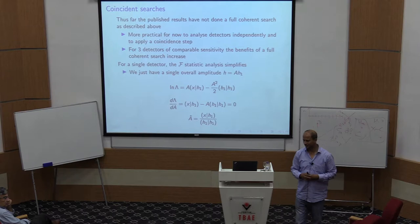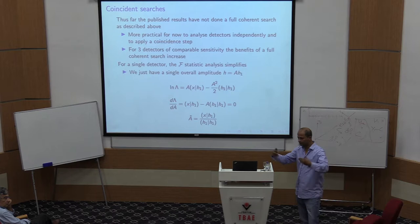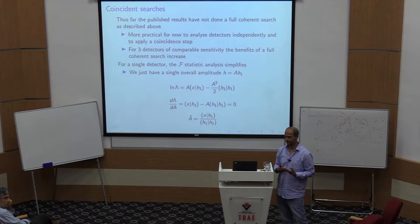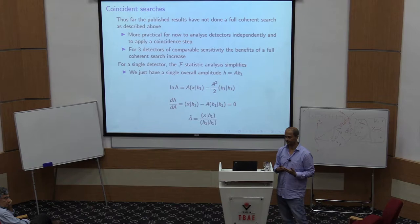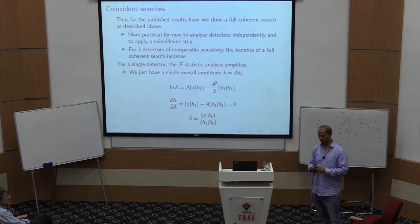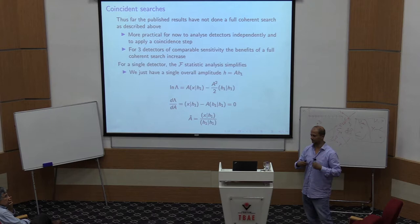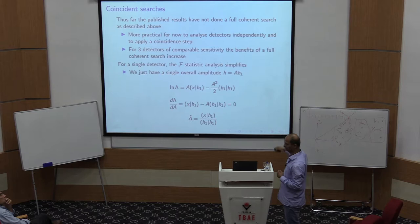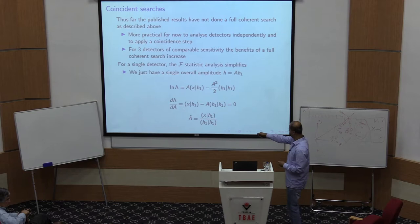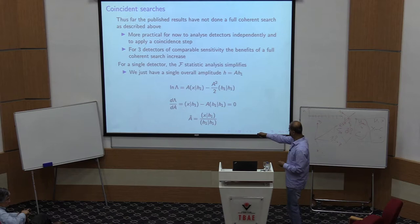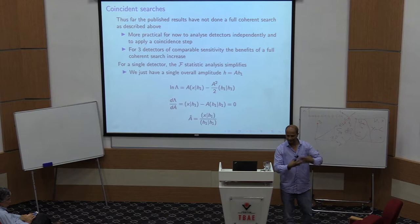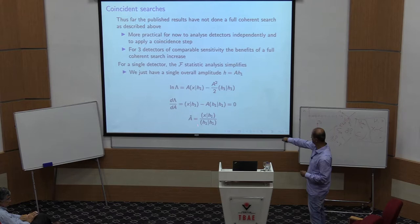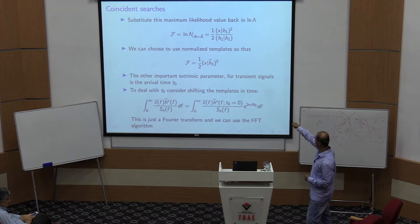For two detectors, the coincidence analysis can be improved to be almost comparable to a full coherent analysis. Now considering a single detector: the log likelihood is A times an inner product minus A squared times another term. Maximizing over A gives the best fit amplitude, which is put back into the log likelihood to get the F-statistic — now simply one Fourier transform squared for a single basis function.